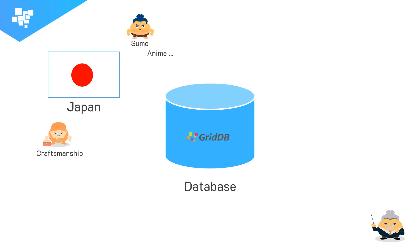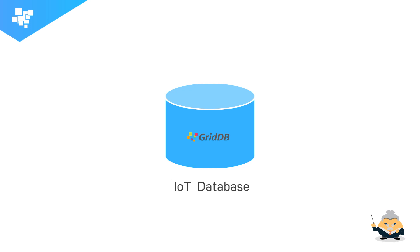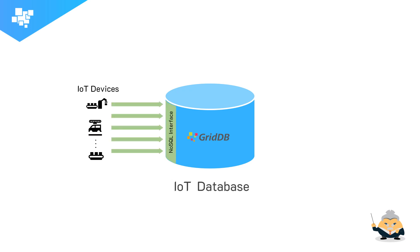GridDB is an IoT database. Many of Toshiba's customers came from the manufacturing and social infrastructure sectors where IoT devices have become increasingly prevalent. The massive amount of data coming from these IoT devices must be stored in a database, which would put a lot of stress on a conventional relational database. GridDB exists as a NoSQL database and offers a NoSQL interface to accommodate the ingestion of very large amounts of sensor and IoT data.